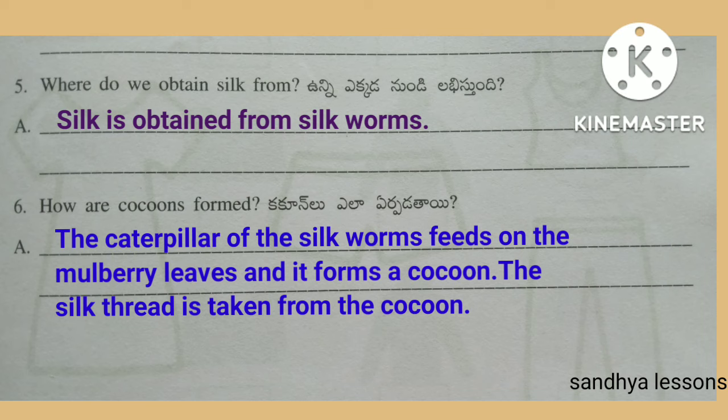Sixth question: How are cocoons formed? The caterpillar of the silkworm feeds on mulberry leaves and forms a cocoon. The silk thread is taken from the cocoon.